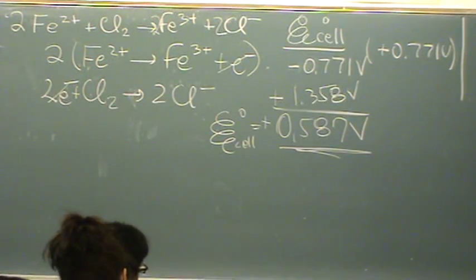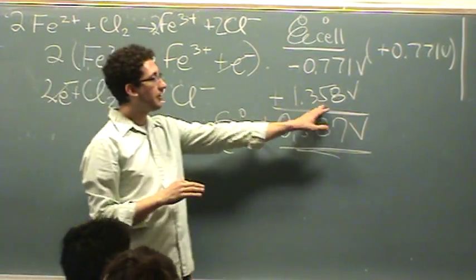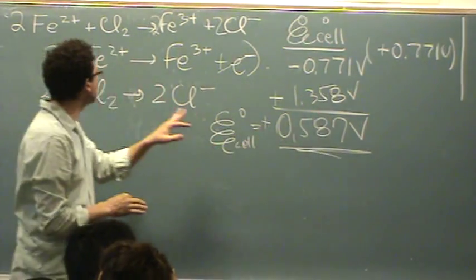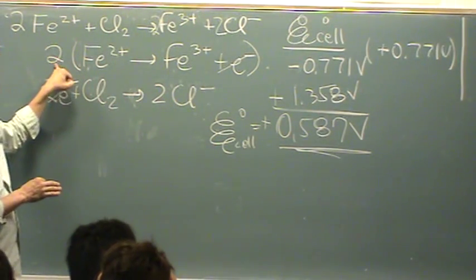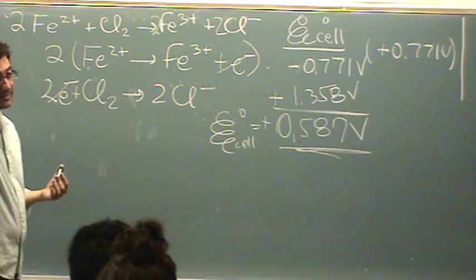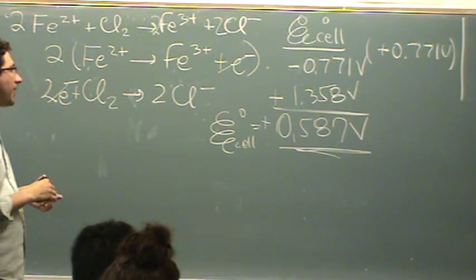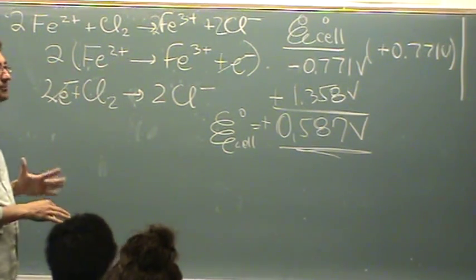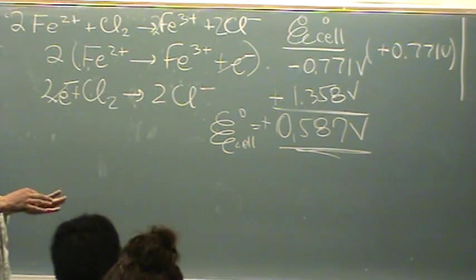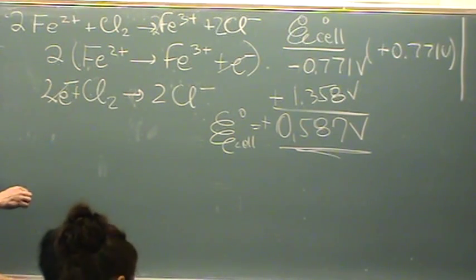Does it matter? It's not going to, not for what we're doing. Because if you get this number from the table, you don't have to multiply it by 2. So it doesn't matter for us. It would matter if I said write the overall reaction. It would matter if we're doing a different calculation where you need n, which is the moles of electrons transferred. In this case, 2.